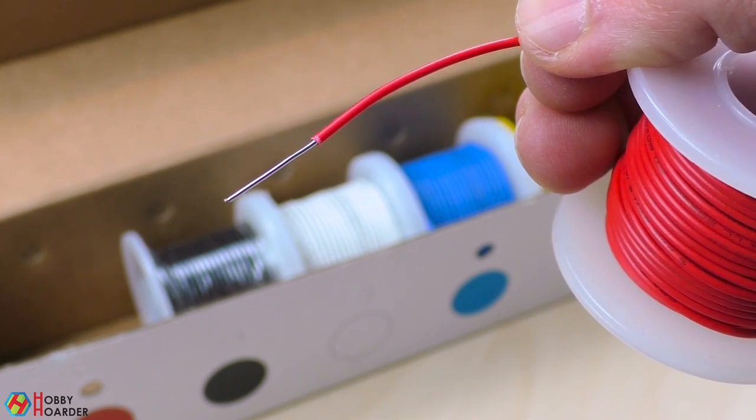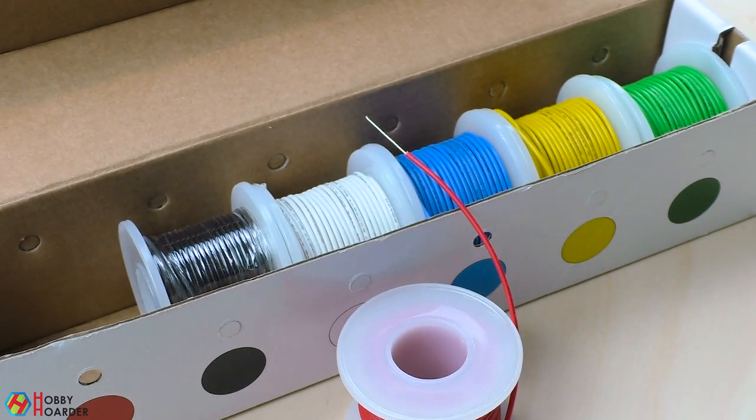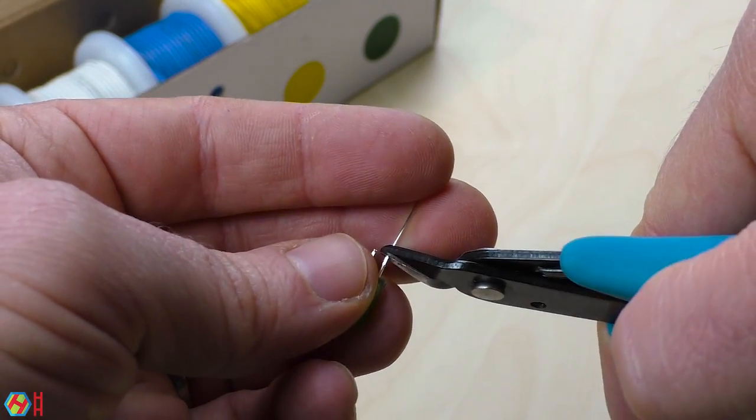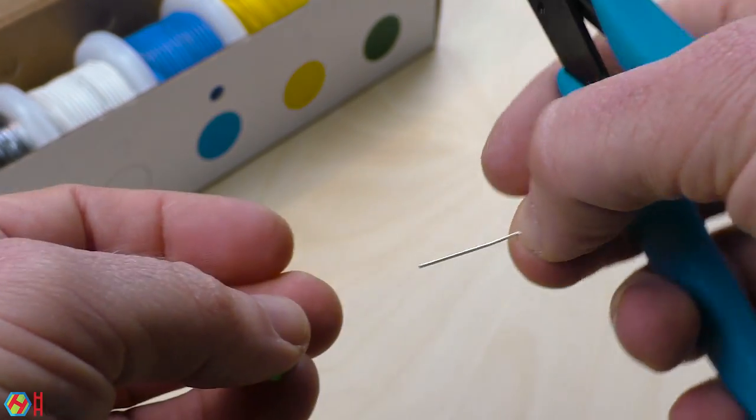The holes are for standard jumper wires that you can find with any breadboard or Arduino kit, but they do have to be solid. If you don't have any wires like that, you can improvise with an LED or a resistor.